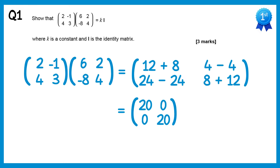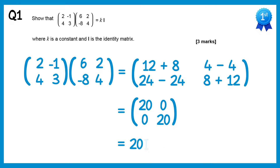Notice we have 20 on the diagonal, so we have 20 lots of the identity matrix, which is I. So we've now shown that these matrices multiplied together equals kI, where k is a constant which happens to be 20, and I is the identity matrix.